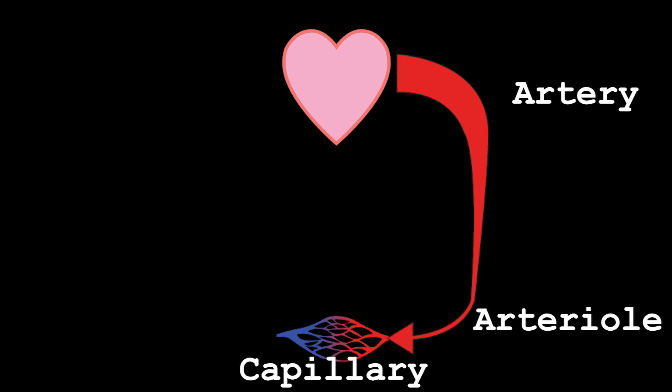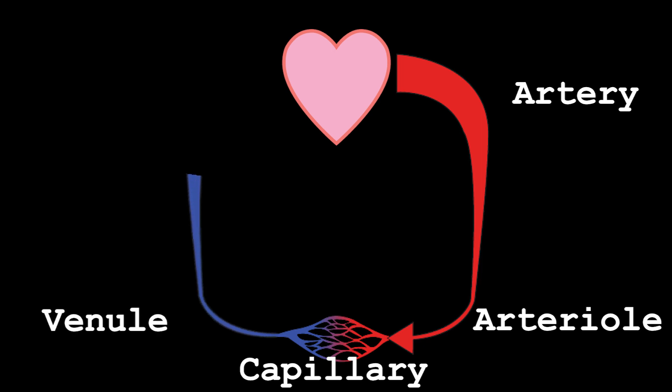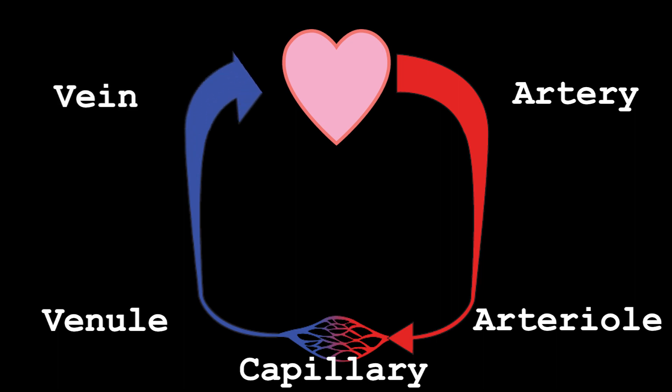After blood leaves a capillary, it enters a venule, which then merges together with other venules to form veins. Veins carry blood back to the heart. You can think of arteries as the blood delivery system and veins as the return service.